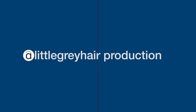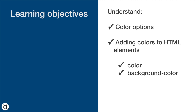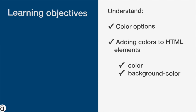Hey, it's Mike again, and thanks for joining me on this third video on CSS. This time we're going to look at colors. In the previous video I was playing with colors but I didn't explain them because we were just adding CSS to our HTML. For this video we want to understand our options when adding colors and then how to add colors to HTML elements, and we'll look at text or font colors and also background colors.